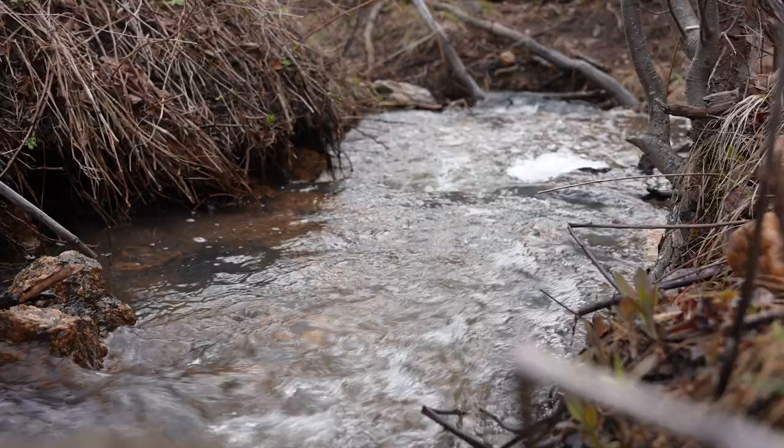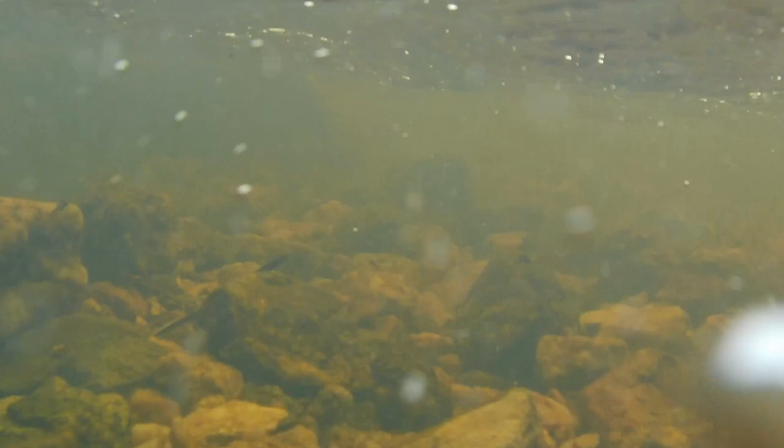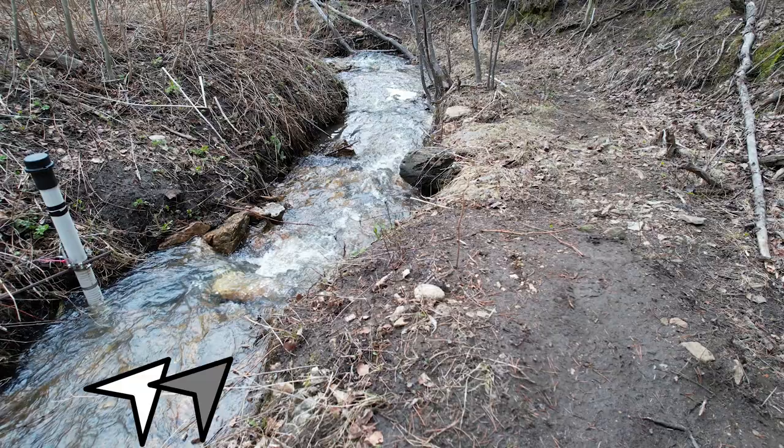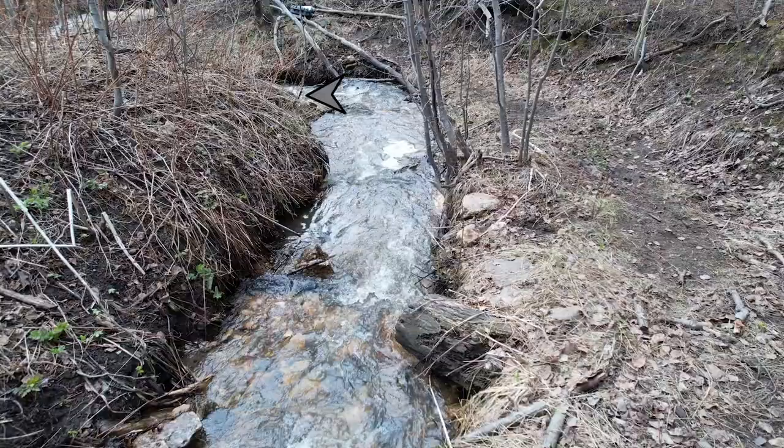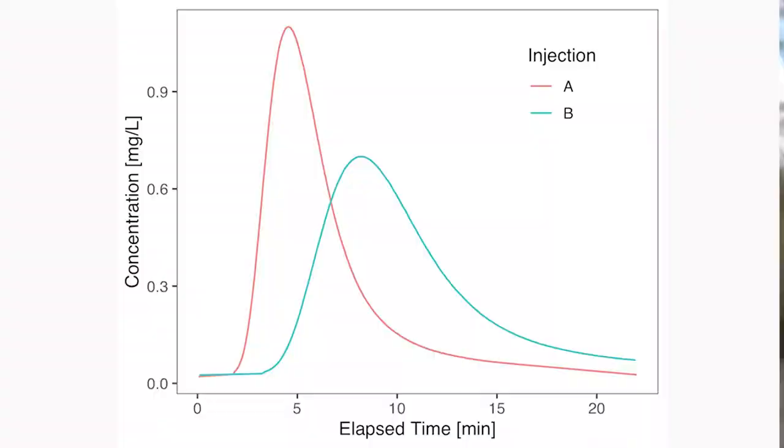Advection is the bulk movement of stream tracer with the main fast flow of the stream. Dispersion occurs due to real-world differences in velocities, which causes some tracer to move ahead of the bulk flow and some of it to lag behind the bulk advection of solute. Exchange of stream water and tracer between the main flow and in-channel hydraulic dead zones like eddies, for example, further delay the downstream transport of solute, resulting in a characteristic tailing of the tracer breakthrough curve.